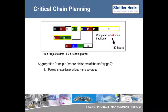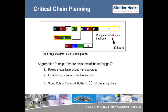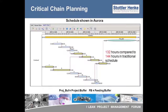The location of the protection is just as important as the amount. Buffers of protection are strategically located in the project plan, with a large project buffer at the end of the project. Here is the Gantt chart representation of the critical chain network. Critical chain elements are in yellow and buffers are elliptical in shape.